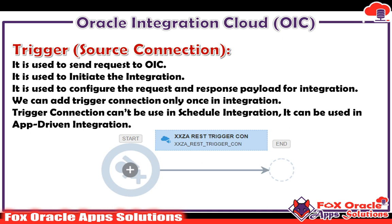We need an endpoint to configure the request and response, and that endpoint will be a trigger type connection. We can add a trigger connection only once in an integration, because the trigger connection is used to initiate the integration. We cannot initiate our integration many times, that is why we can use the trigger connection only once. It will always be the start endpoint of the integration.